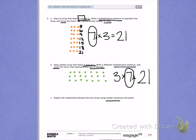I want you to use number sentences and words to tell how the arrays are the same and how the arrays are different. All right.